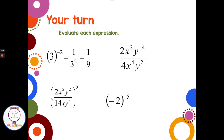The expression raised to the zero power — zero applies to everything, so we just get 1. For the fraction in the top right: the coefficients 2 and 4 reduce to 1 half. The x's are both positive; there are more x's on the bottom by 2, giving x squared in the denominator. The y has a negative exponent on top, so bring it to the bottom — there are already two y's there, bringing down 4 gives y to the sixth. Answer: 1 over 2x squared y to the sixth.